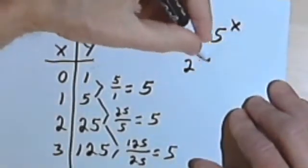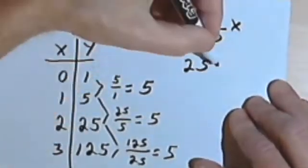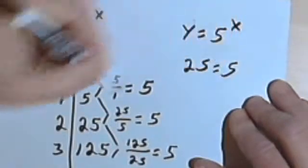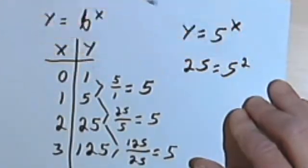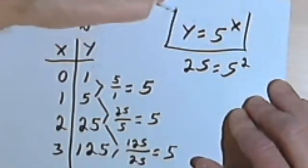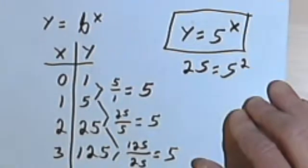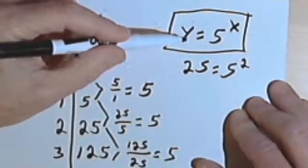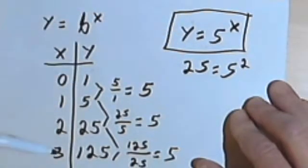Let's just do one more. When y is 25, it means I'm going to have 5 raised to the 2nd power. 5 squared is 25. So this, y equals 5 to the x, is going to be the specific equation for this table of values.